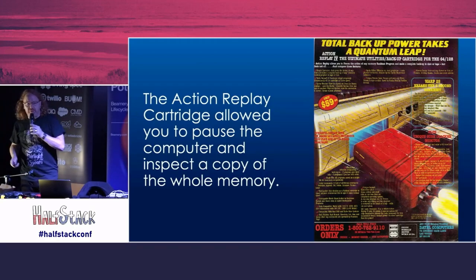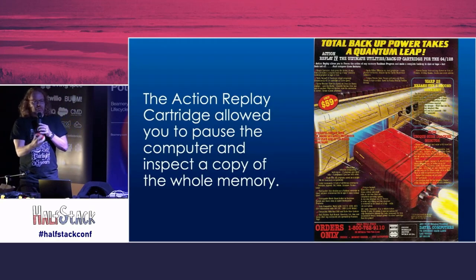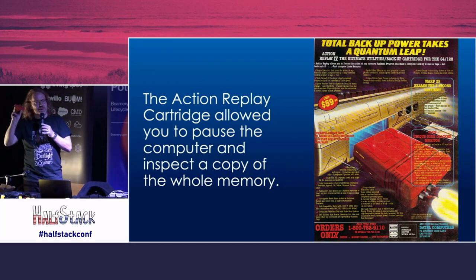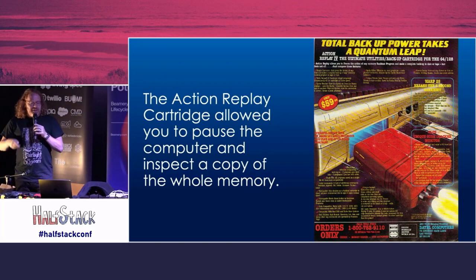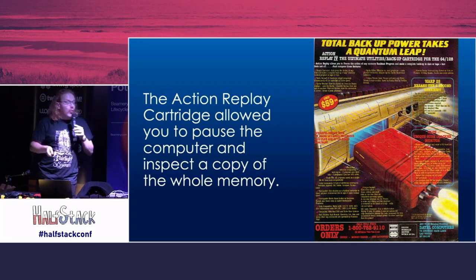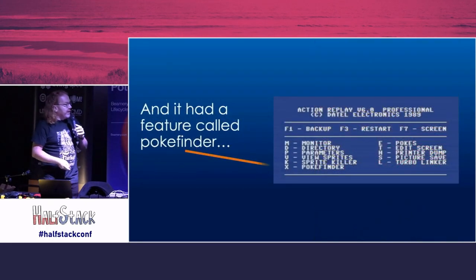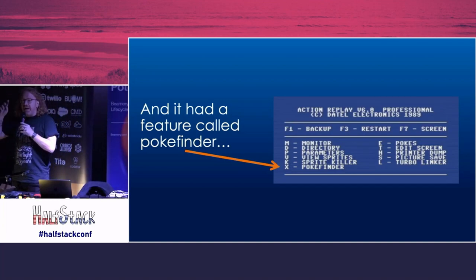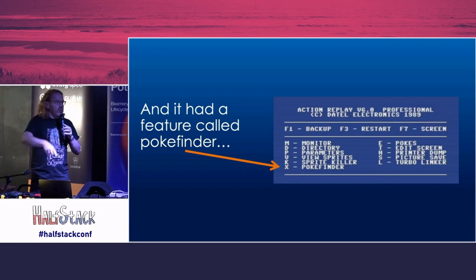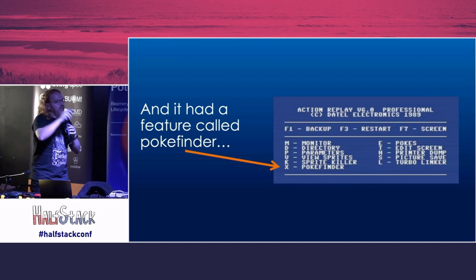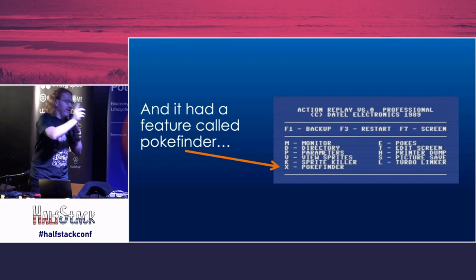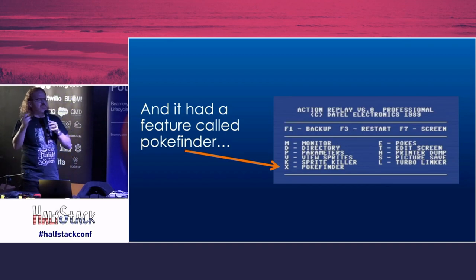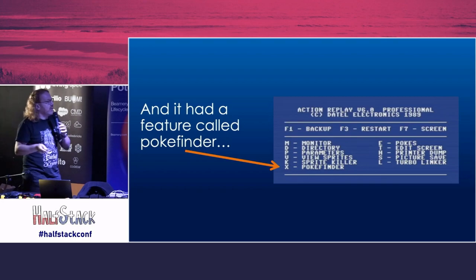That all changed when the Action Replay came out. It actually allowed you to press a button, make a snapshot of the whole memory into a chip, and then mess around with it. Back then, advertising in magazines had a bit more text than it does now. The Action Replay cartridge allowed you to pause the computer and inspect a copy of the whole memory. It had a feature called the Poke Finder.